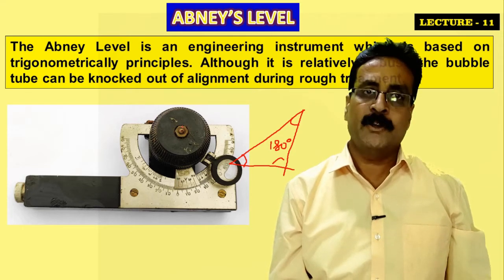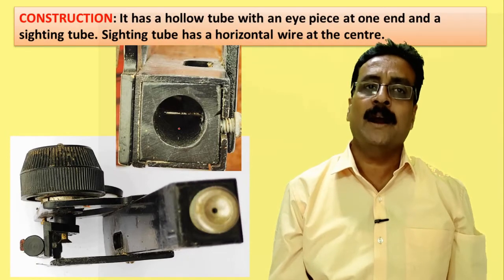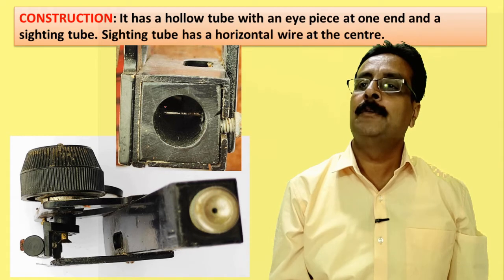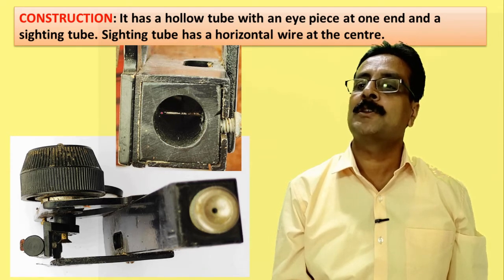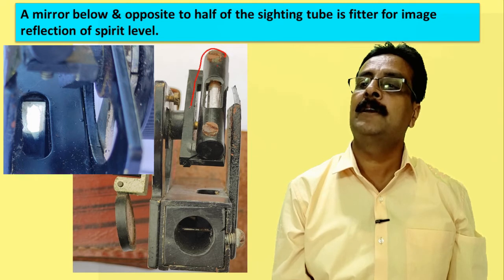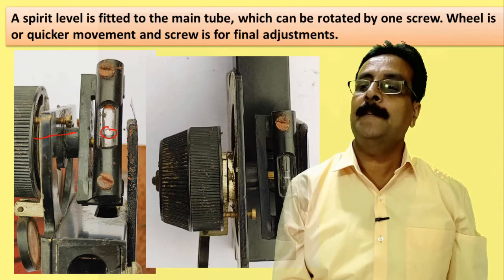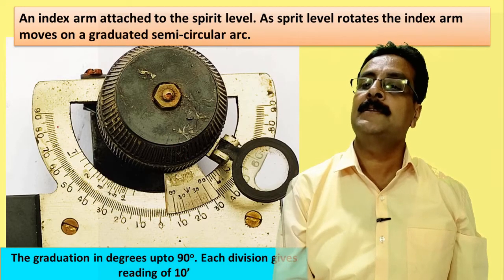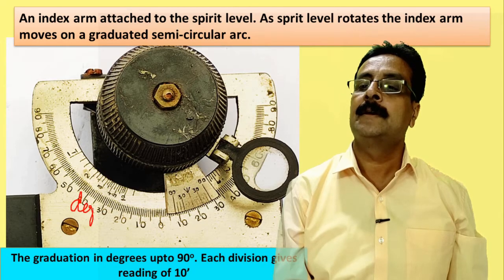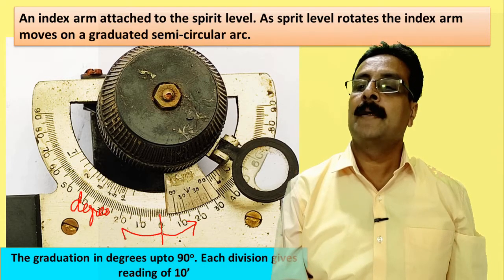The Abney level is an engineering instrument based on trigonometry principles. Although very robust, the bubble can be knocked out of alignment during rough treatment. It is a handy, user-friendly instrument. It has a hollow tube, a horizontal wire, a rotating knob, and a spirit level with a bubble that indicates whether it is level. There is a degree scale on the lower side, reading from zero to the right and left.